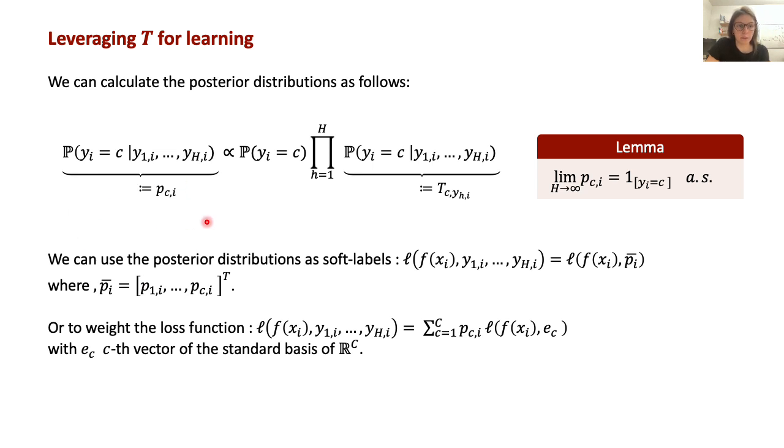Once obtained these posterior distributions, we can use them as soft labels, or to weigh the loss function. For categorical cross-entropy loss, these two loss functions actually correspond, but in general they define two different loss functions. In our case, we can use the estimated noise transition matrix to obtain the posteriors.